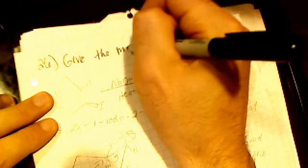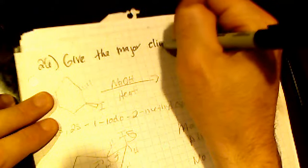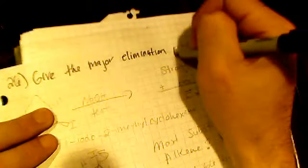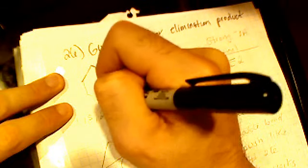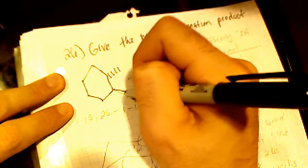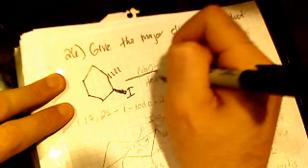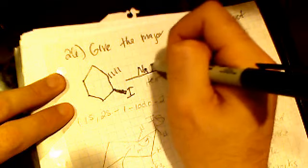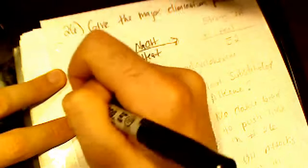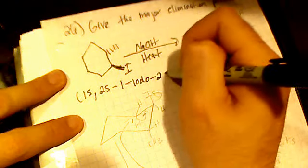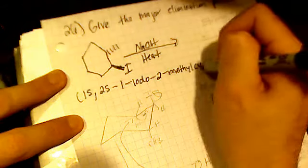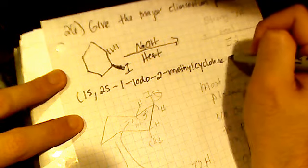All right, so number 26 says give the major elimination product. So here they give us this molecule, and they're treating it with sodium hydroxide and heat. The name of this product is 1s,2s-1-iodo-2-methylcyclohexane.